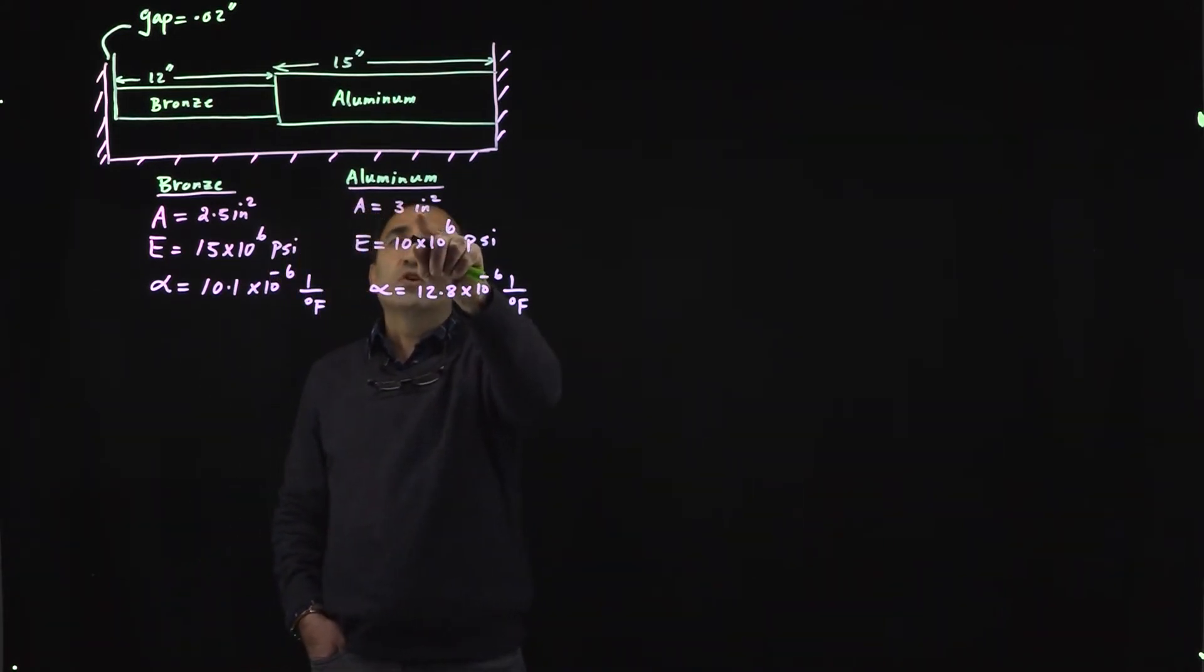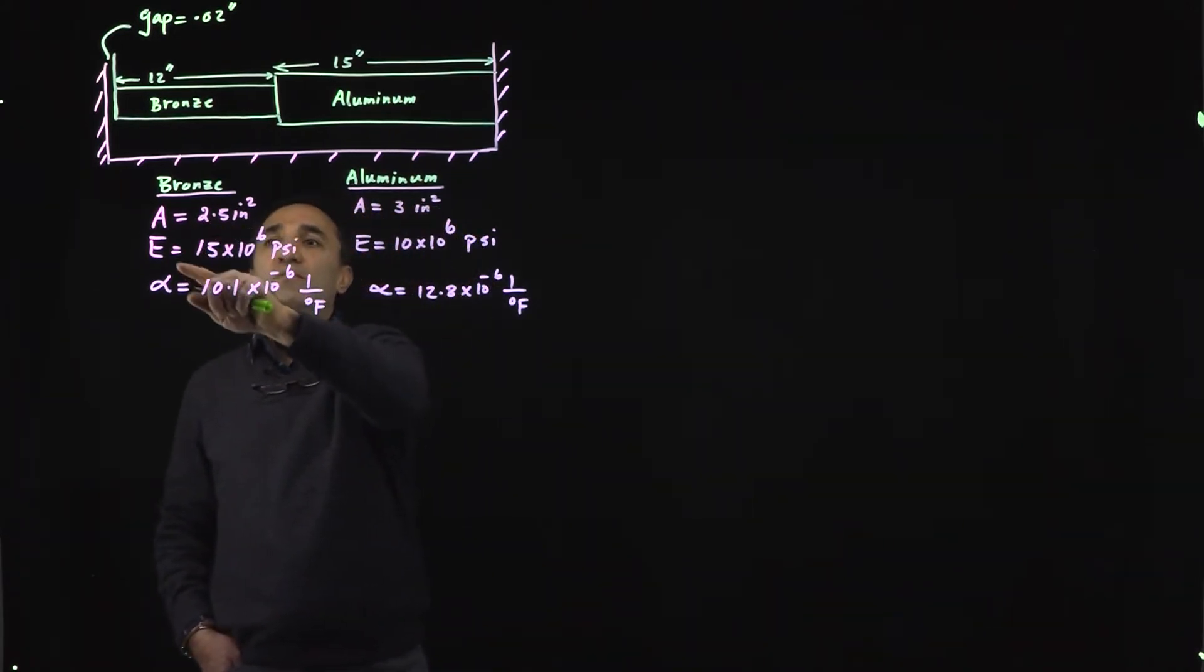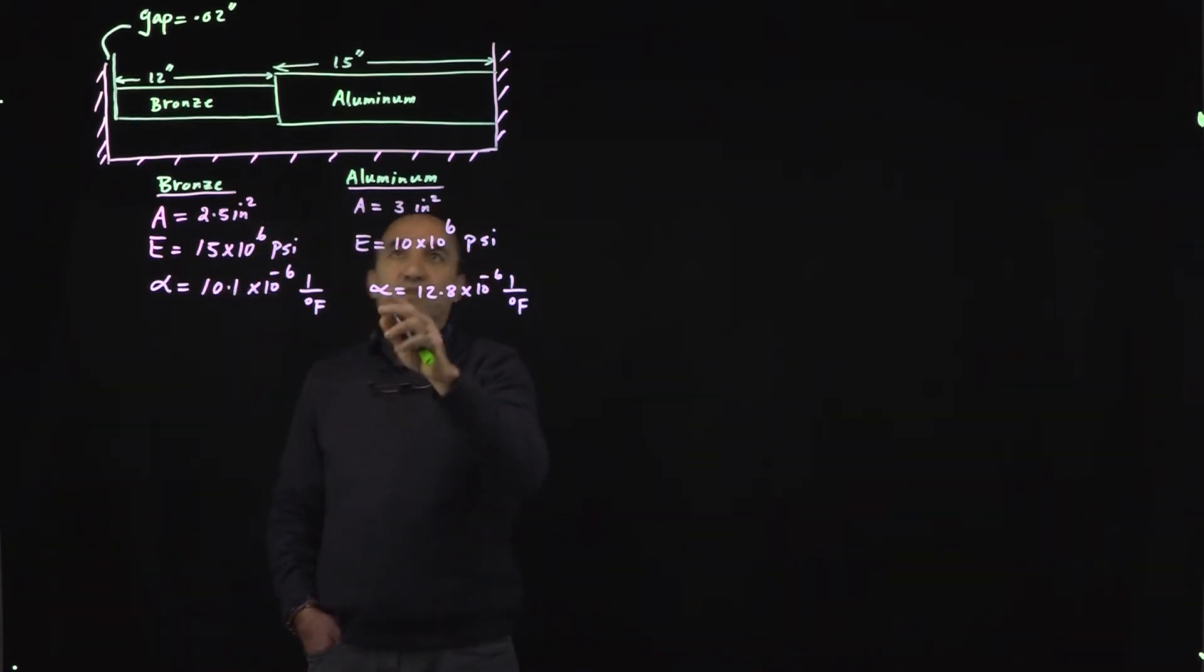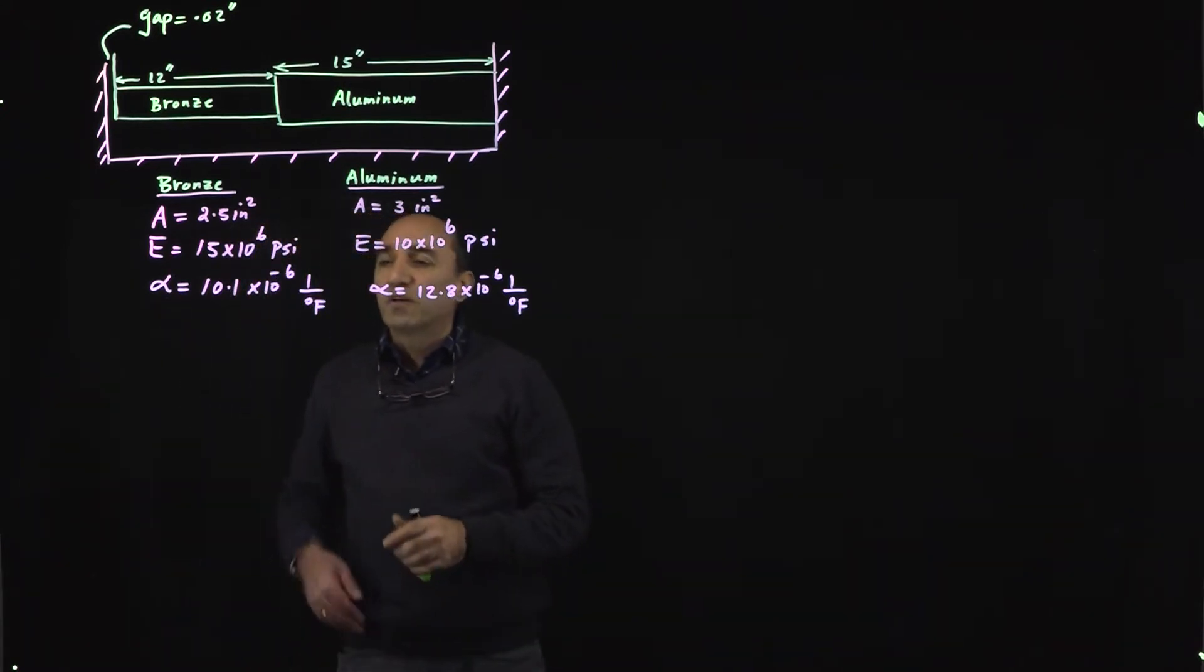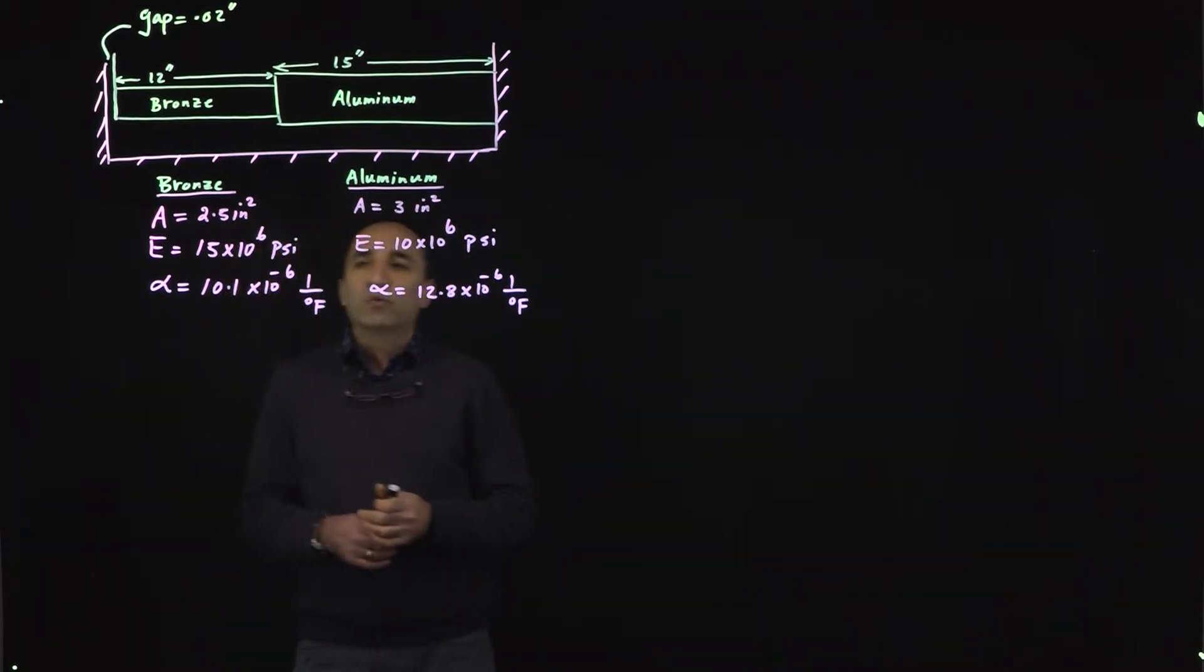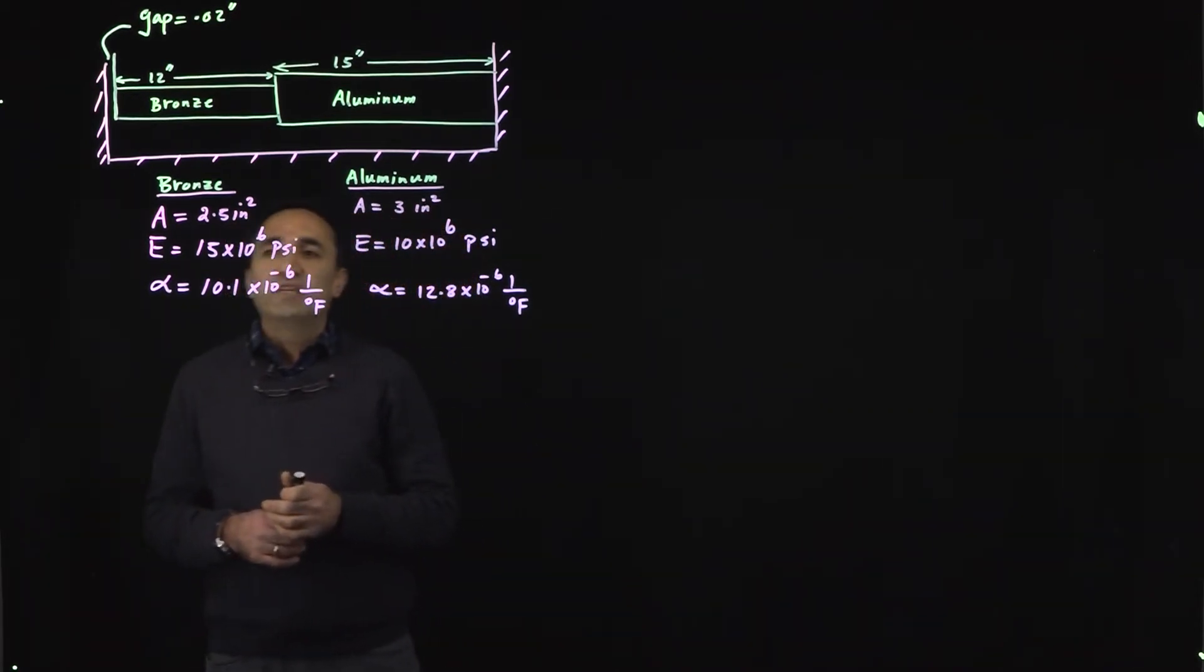We have the cross-sectional area for the aluminum and the bronze, modulus of elasticity 10 million psi for aluminum, 15 million for bronze. Notice here we have the coefficient of thermal expansion. The coefficient of thermal expansion is the amount of normal strain due to one degree change in temperature.